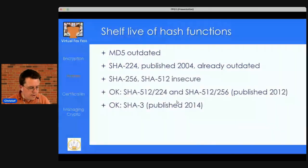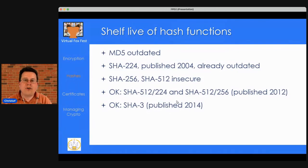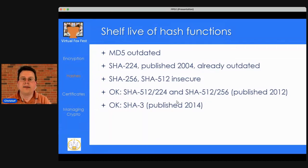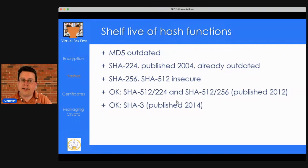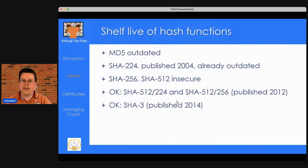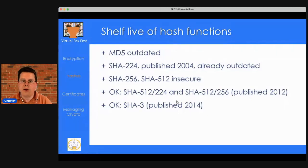Hash functions don't have a long shelf life — they become outdated quickly. MD5 is outdated. SHA-224 was published in 2004 and is already outdated. SHA-256 and SHA-512 are in use today but have certain vulnerabilities. The secure hash algorithms currently acceptable are SHA-512/224, SHA-512/256 (published 2012), and SHA-3 (published 2014). If your code is older than 2012, it cannot be using a currently secure hash function, since those are the earliest dates for the secure algorithms available now.